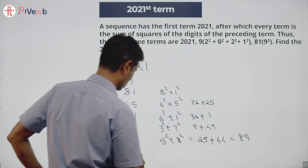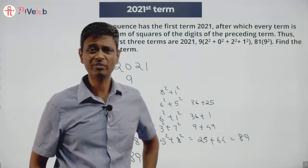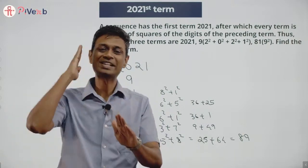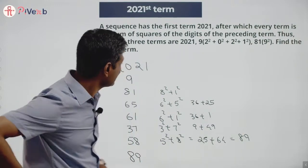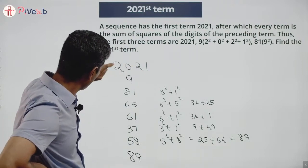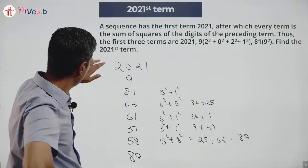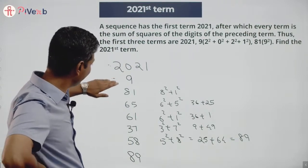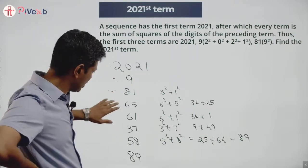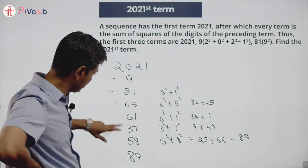Next is 5² + 8² = 25 + 64 = 89. Why am I doing this? Why am I continuously filling numbers? I'm looking for one thing specifically. I know each number is generated from the previous number: 2021 generates 9, 9 generates 81, 81 generates 65, 65 generates 61, 61 generates 37.